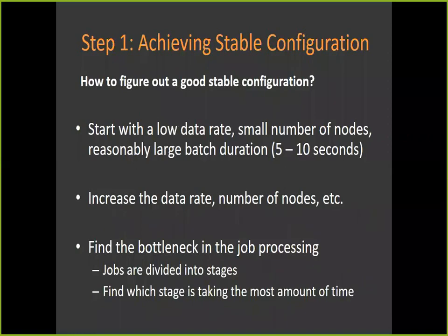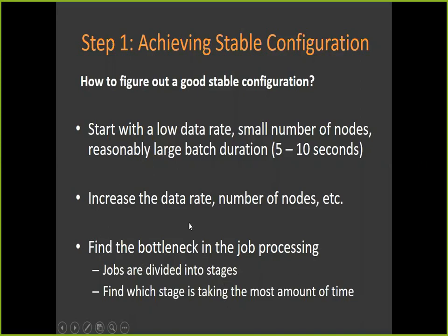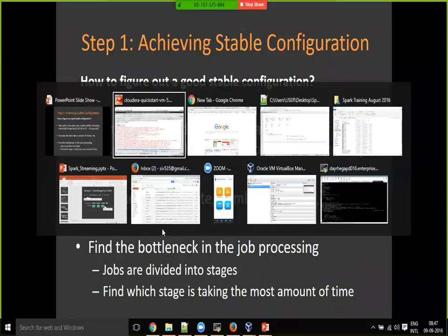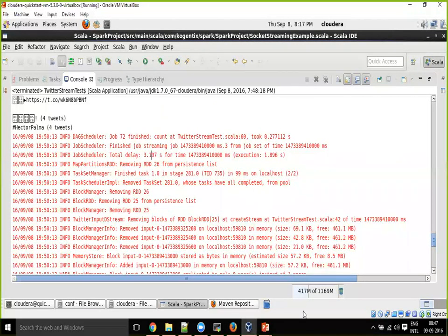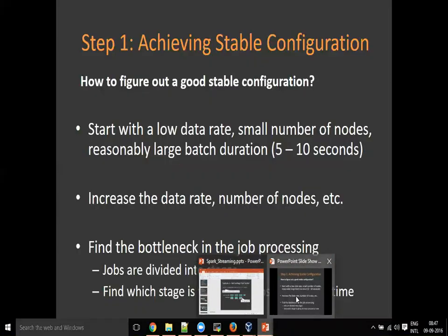To figure out a good stable configuration, start with a low data rate, a small number of nodes, and a reasonably large batch duration — around 5 to 10 seconds. Push your load at low speed, then slowly increase the data rate and observe whether your system is able to process at that speed. Find the bottleneck in job processing by looking at the job stages and identifying which stage is taking the most time, then see if any optimization can be done at the stage level.